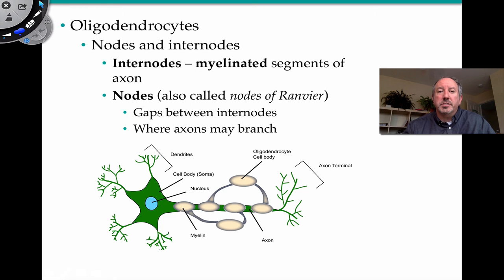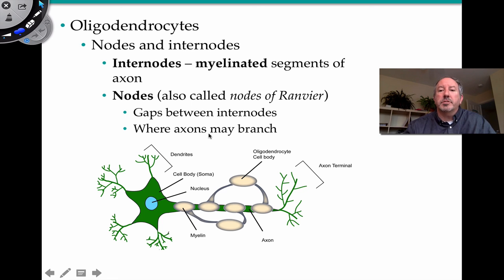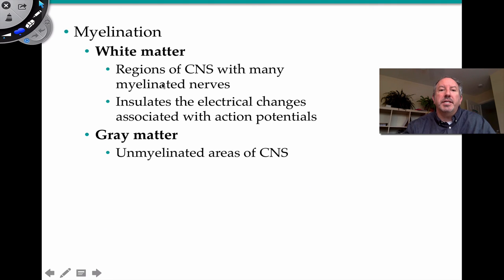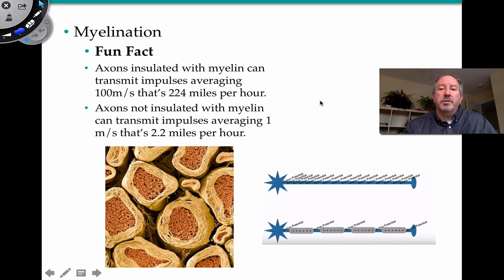In the central nervous system, white matter is tissue surrounded by myelin from oligodendrocytes, and that helps increase speed. Gray matter consists of areas in the central nervous system that do not have myelinated cells. A fun fact on speed: axons insulated with myelin — white matter from oligodendrocytes — conduct at 224 miles per hour, whereas axons that are not insulated conduct at only 2.2 miles per hour.